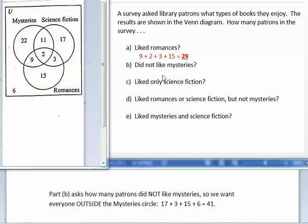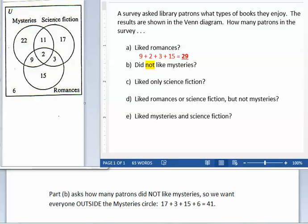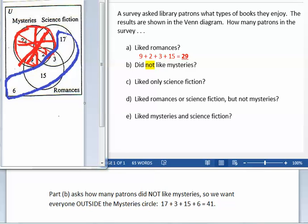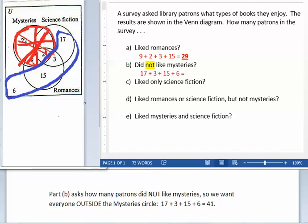Part B asks how many patrons did not like mysteries. So we do not want the mystery circle. We want everyone outside the mystery circle. 17 plus 3 plus 15 plus 6, which equals 41.